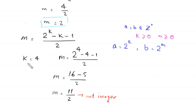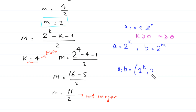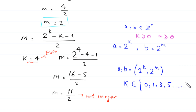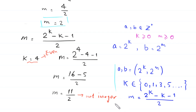We notice that when k is an even number, we get no solution for a and b. So the final solution of this equation is: (a, b) = (2 to the power k, 2 to the power m), where k is an element of the set {0, 1, 3, 5, ...} — that is, 0 and the odd positive integers — and m equals (2 to the power k minus k minus 1) divided by 2. This is the final answer for this problem.